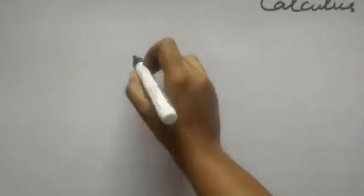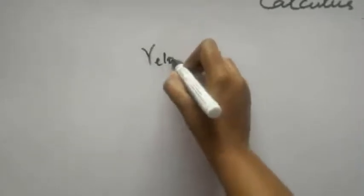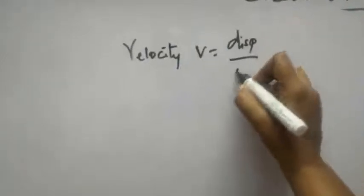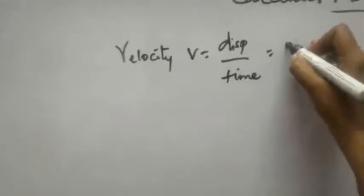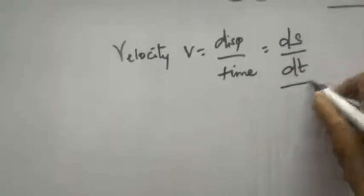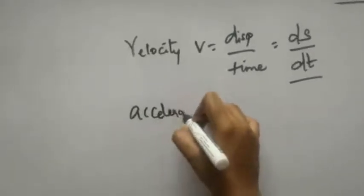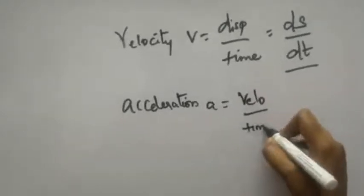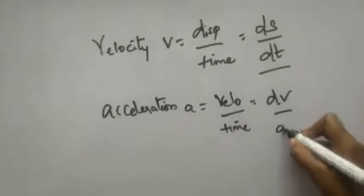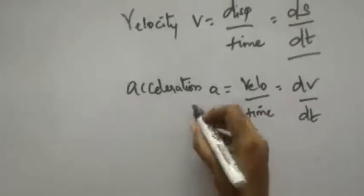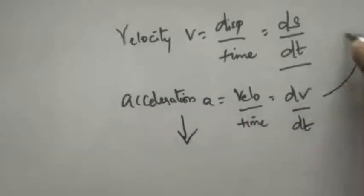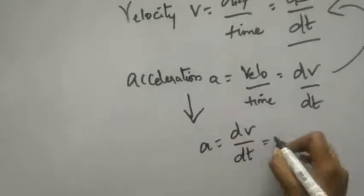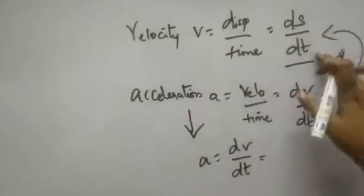One more basic thing we have to understand: velocity v equals displacement by time — that is, change in displacement by change in time. Acceleration a is equal to velocity by time, that is change in velocity by change in time. And this acceleration can also be written with respect to displacement, as acceleration equals change in velocity by change in time, and velocity equals change in displacement by change in time.